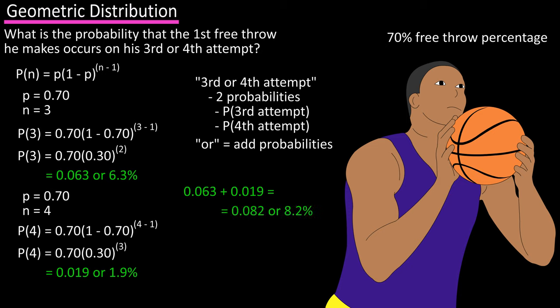0.019 plus 0.063, which equals 0.082, or 8.2%. So there's an 8.2% probability that the player makes his first free throw on his third or fourth attempt in tonight's game.